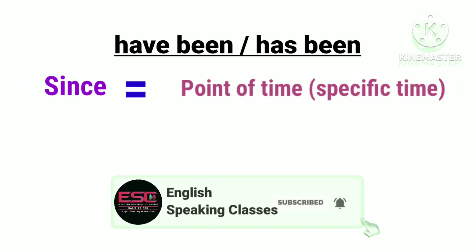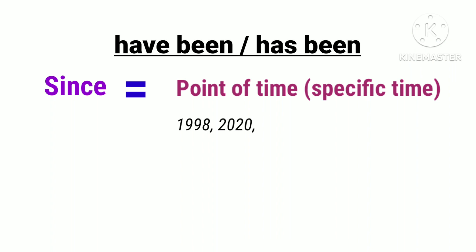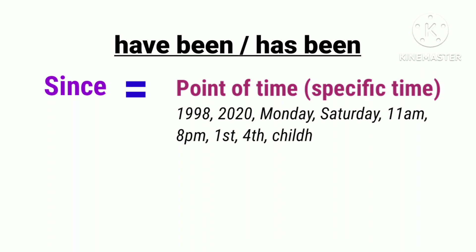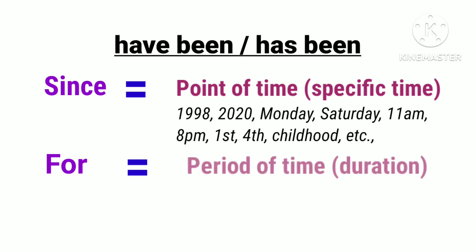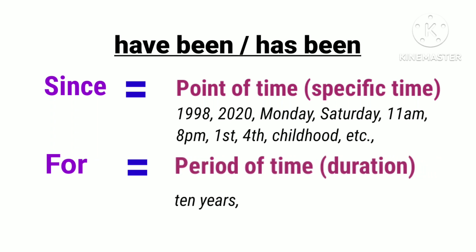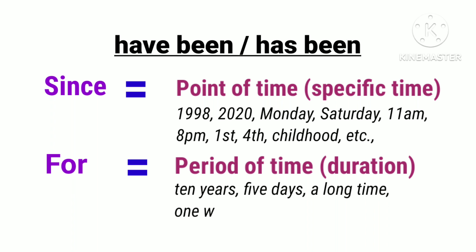Since کا use ہم کوئی ایک particular point of time پر کریں گے — جیسے کوئی سال، کوئی دن، یا کوئی specific time بتانا ہو۔ اور 'for' ہم duration کے لئے use کریں گے — جیسے دو دن، چار ہفتے، چار سال اس طرح سے۔